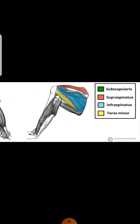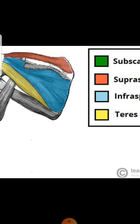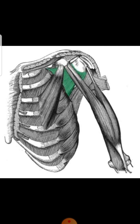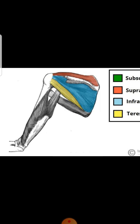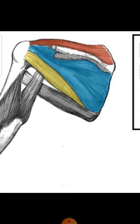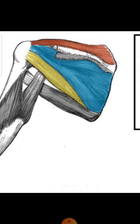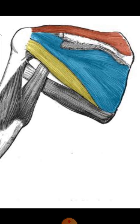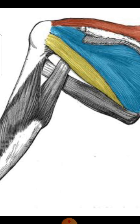We will first start with the teres minor muscle. There are four muscles in this group, highlighted with different colors. The teres minor is highlighted in yellow. Its origin is from the lateral border of the scapula, and its insertion is onto the greater tubercle of the humerus. The function of this muscle is to laterally rotate the arm, as well as stabilization of the humerus as part of the rotator cuff.